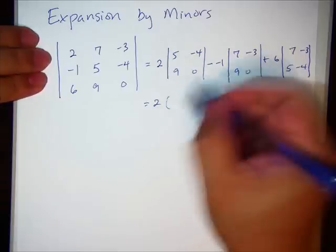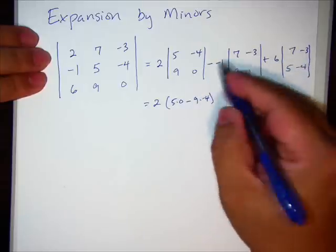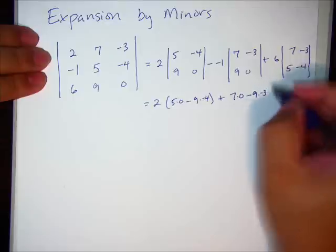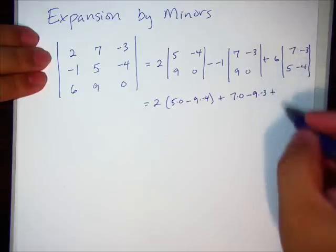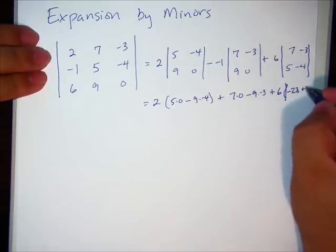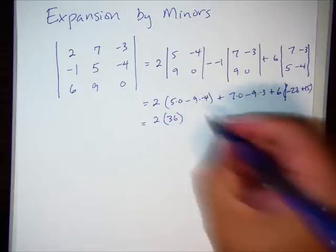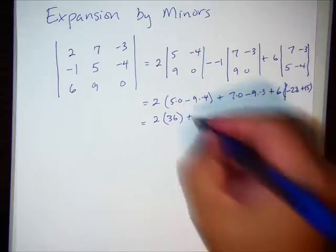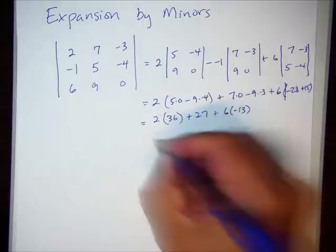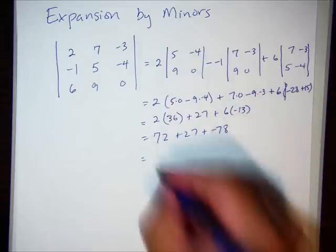Now it's pretty easy to find this determinant. 5 times 0 minus 9 times negative 4. I'm going to go ahead and have minus negative plus. 7 times 0 minus 9 times negative 3. Plus 6 times, I'm running out of space, 7 times negative 4. I was running out of space. I just did that part in my head. So this becomes 2 times positive 36 plus 27 plus 6 times negative 13. 72, 27, negative 78. That gives me positive 21.